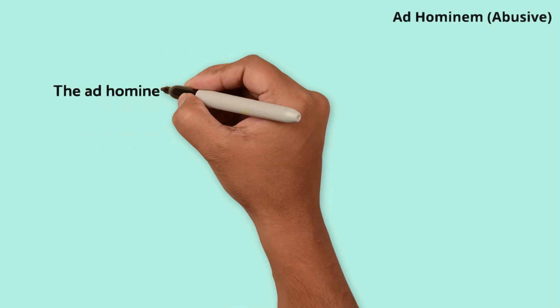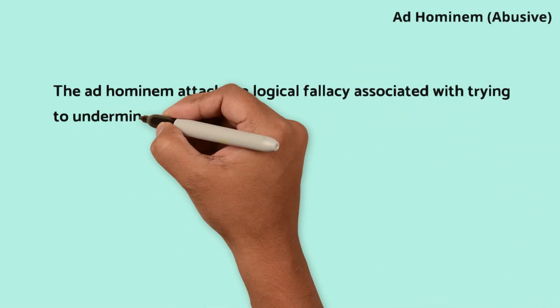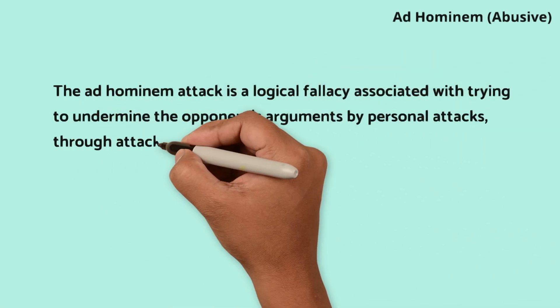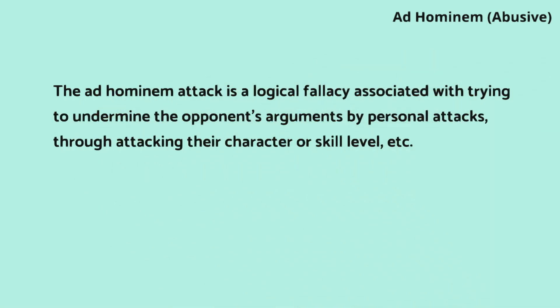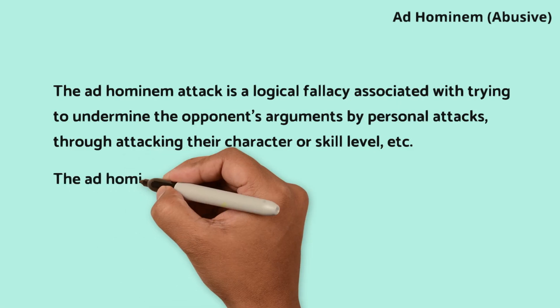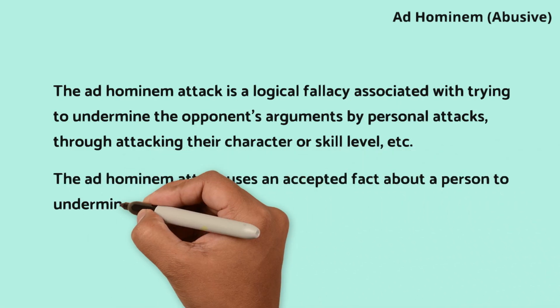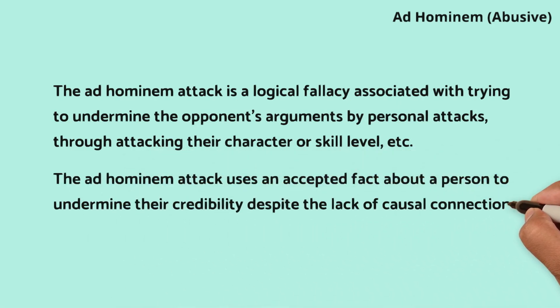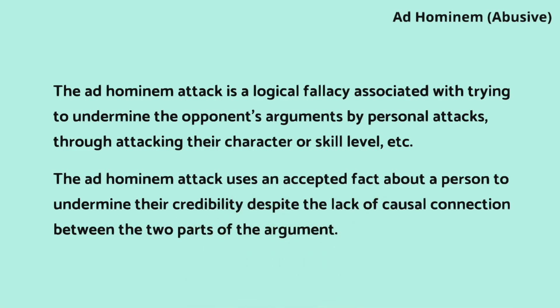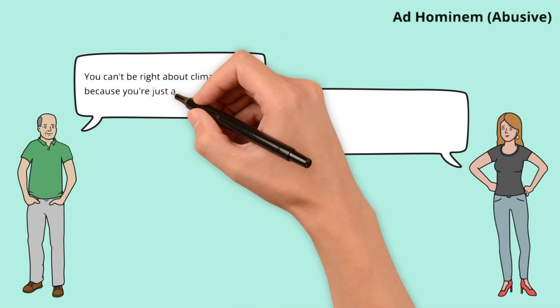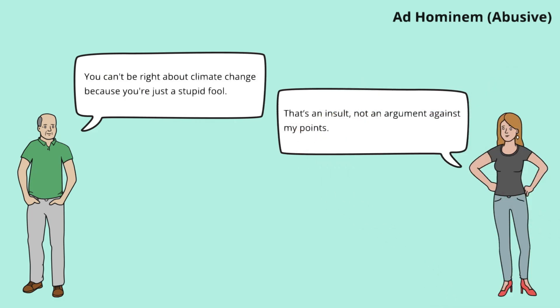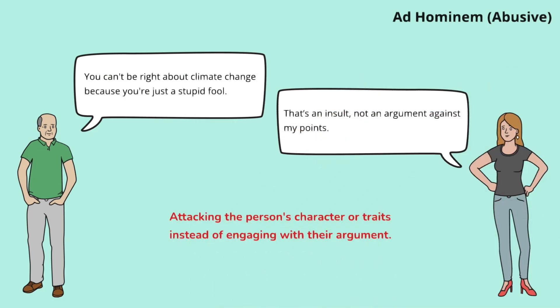The ad hominem attack is a logical fallacy associated with trying to undermine the opponent's arguments by personal attacks, through attacking their character or skill level. It uses an accepted fact about a person to undermine their credibility despite the lack of causal connection between the two parts of the argument. Jacob attacks Emily's character instead of addressing the actual argument about climate change, distracting from the debate and undermining meaningful discussion.